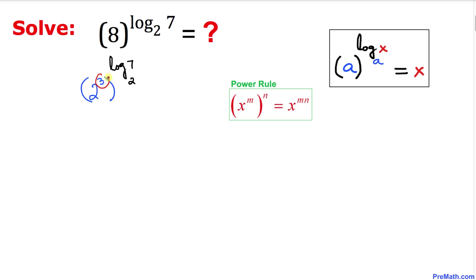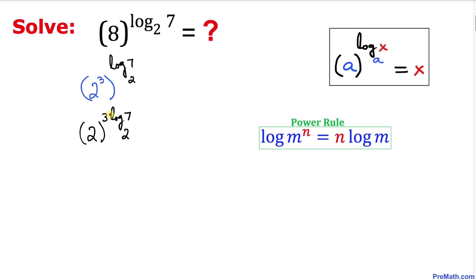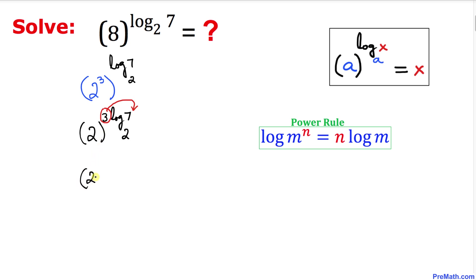We now have two exponents: 3 and log of 7 with base 2. Using the power rule, we multiply them, giving 2 to the power of 3 times log of 7 with base 2. Focusing on the exponent, we apply the power rule again — the coefficient 3 can be brought up as an exponent of 7, giving 2 to the power of log of 7³ with base 2.